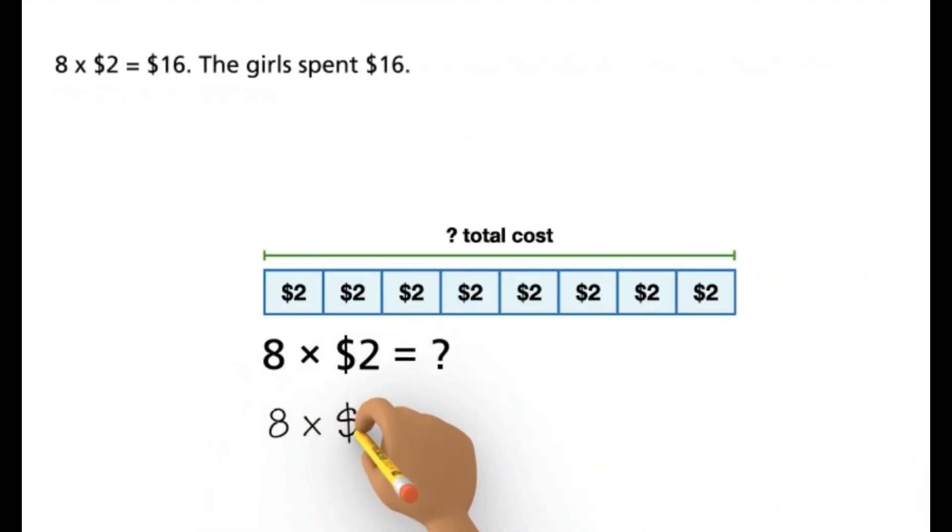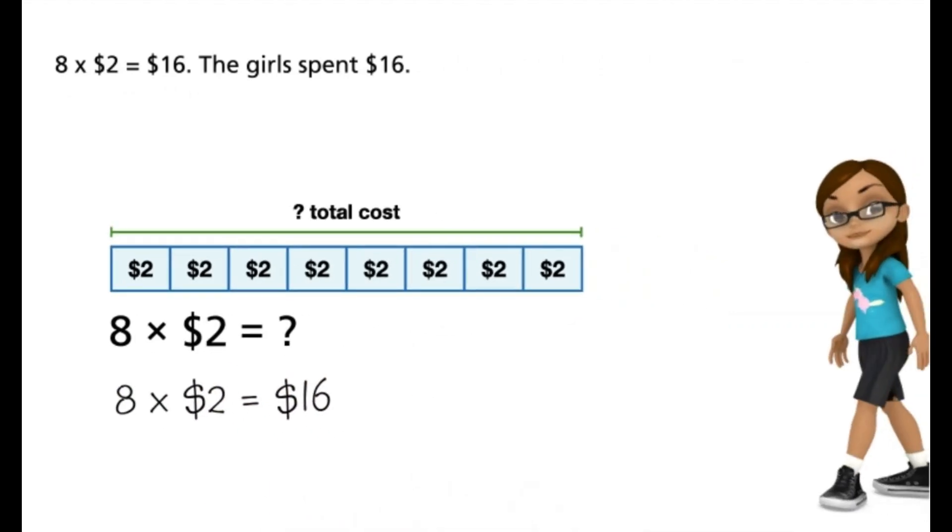8 times $2 equals $16. The girls spent $16.